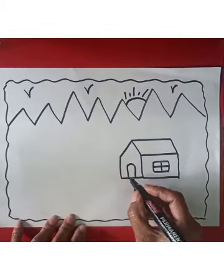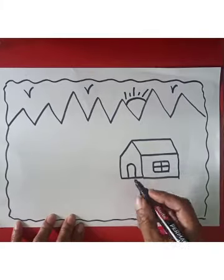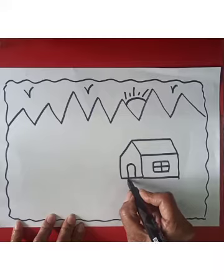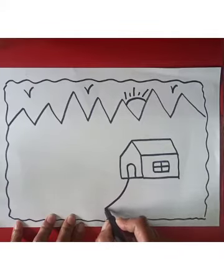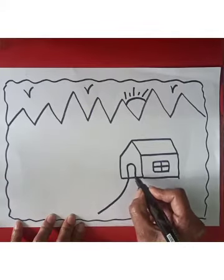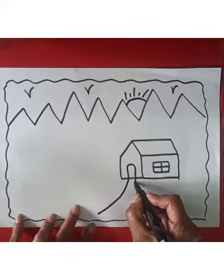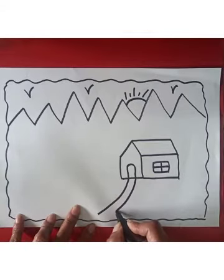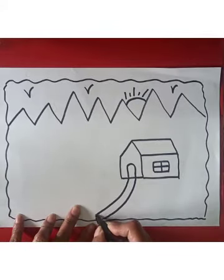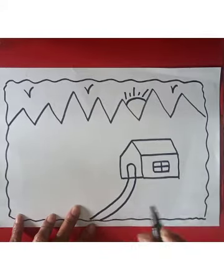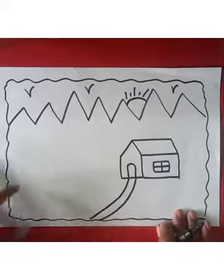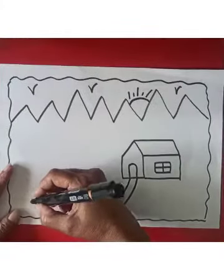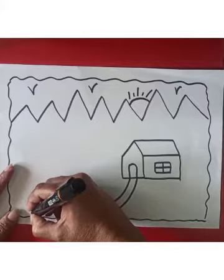There is a road in front of the hut, so draw a road like this. There is a tree in front of the hut.